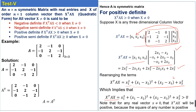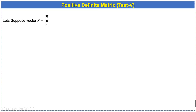This quadratic form is always greater than zero because all the terms are squared. The square of any negative number is also positive, which means this expression can never be negative. Note that for any real non-zero vector x, the product x^T A x will be positive because the square of any number is positive.